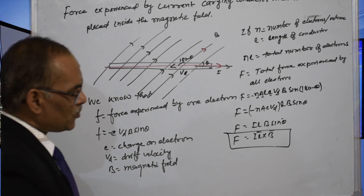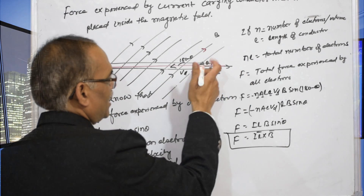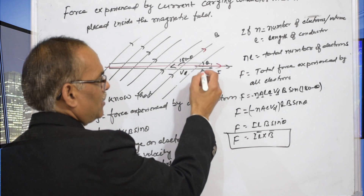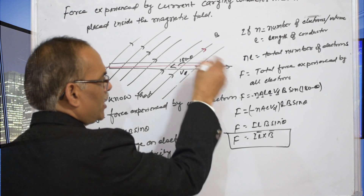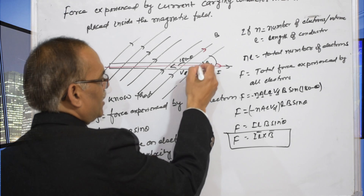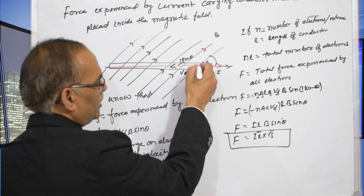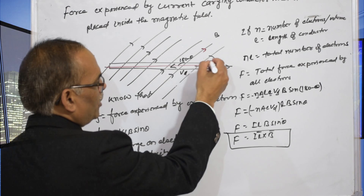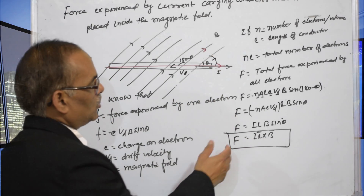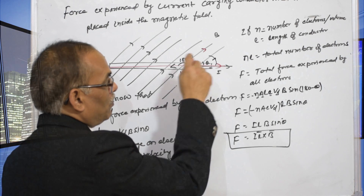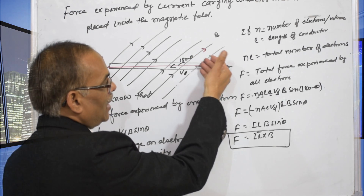The direction of the force can be calculated using the screw rule. Here the current passes and B is the magnetic field. Put a screw where I and B are meeting and rotate from I to B. As the screw rotates anti-clockwise from I to B, the screw comes out. So the direction of the force is perpendicular to the plane containing I and B, in the outward direction.